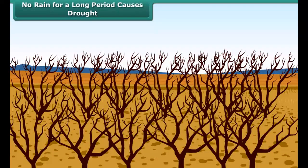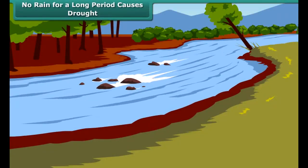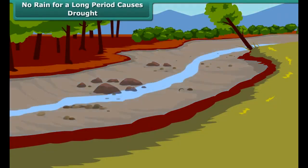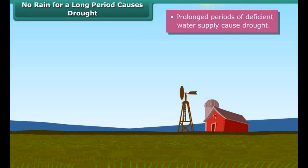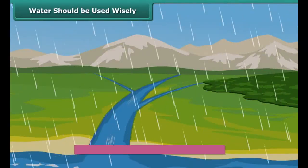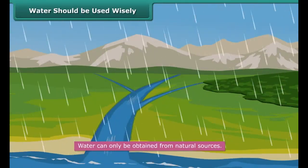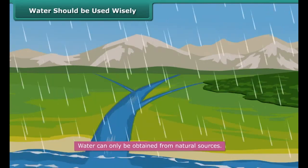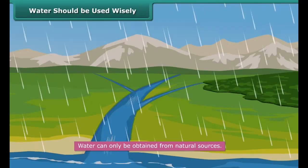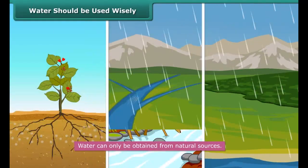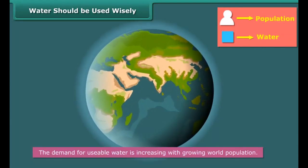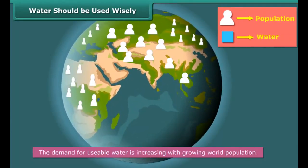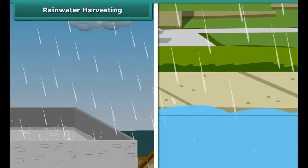What will happen if it does not rain for a very long period? When it does not rain for a very long period, the soil continuously loses water by evaporation and transpiration. The level of water in ponds and wells goes down and some water bodies dry up. Groundwater also depletes. Prolonged periods of deficient water supply cause drought.